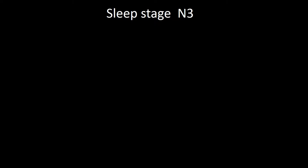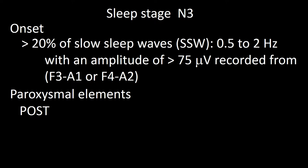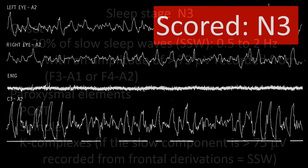N3 is the last non-REM sleep stage arrived at during normal sleep. It should be scored when slow waves of sleep are present in over 20% of the epoch. Paroxysmal elements during N3 may include posterior occipital sharp transients, spindles, and K-complexes without arousal. If the slow component of a K-complex is more than 75 microvolts and is recorded in frontal derivations, it should be scored as a slow sleep wave.